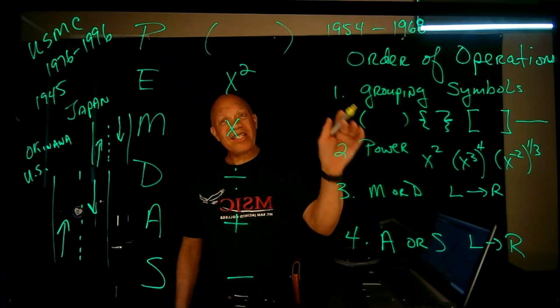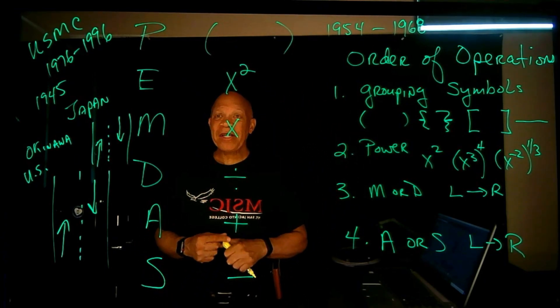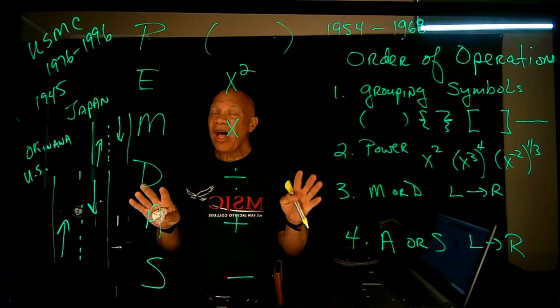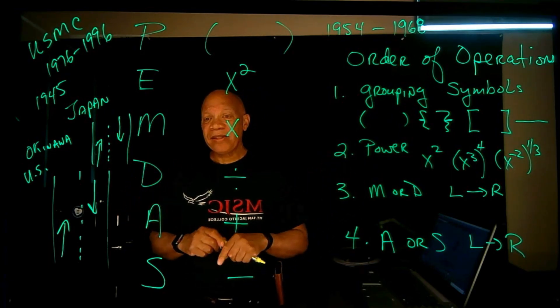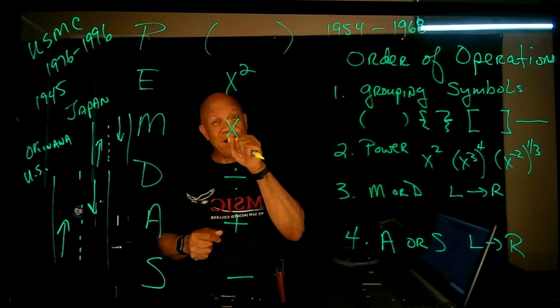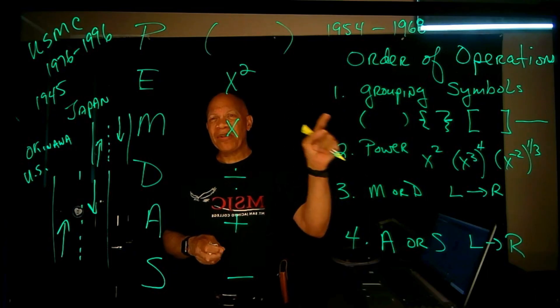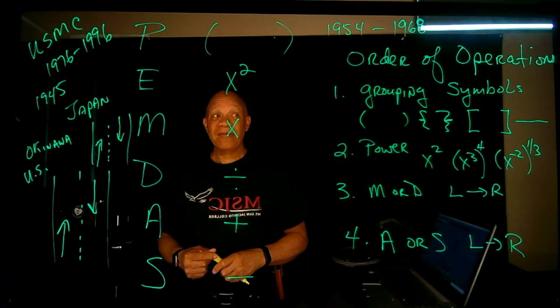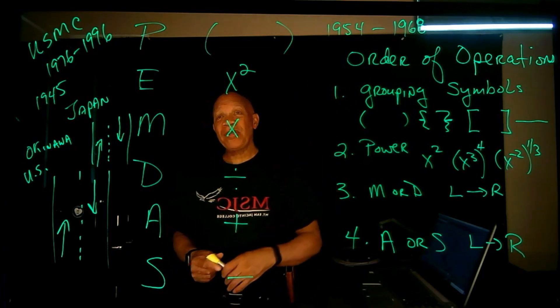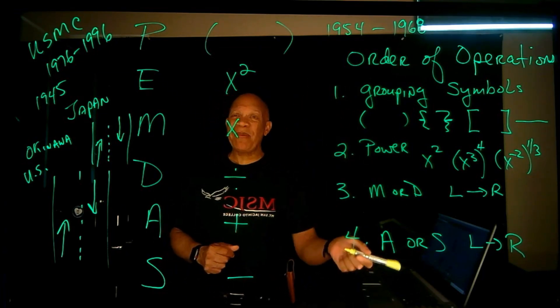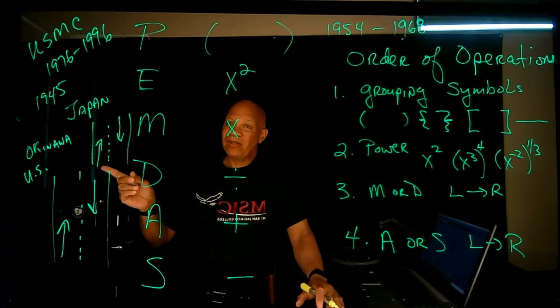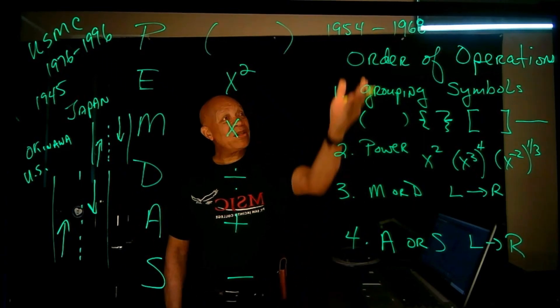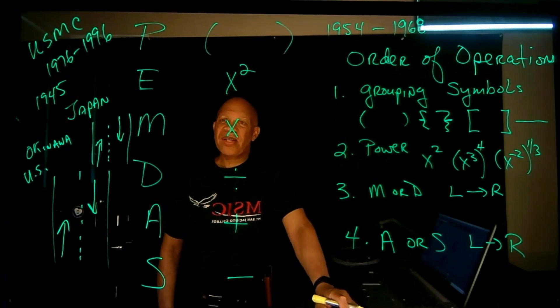The reason this is important is because if I was doing a calculation - see, math is used to solve a lot of scientific problems. We test them using mathematics. That way we don't have to kill nobody if we don't want to, make sense? But the thing is, the beauty about the orders of operation - if I do a math problem here and somebody does it in France or Italy or Russia, I don't care where they're doing it - these are the rules of the road. We're going to get the same answer.